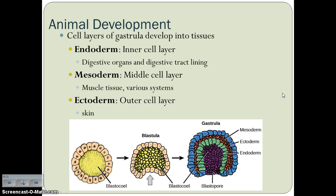The gastrula is really what determines the structure of the organism — how many germ layers it will have and what type of body cavity. The inner cell layer of the gastrula develops into the endoderm, which becomes the digestive organs and digestive tract lining. The middle cell layer becomes the mesoderm, which develops into muscle tissue and various organ systems. The outer cell layer is the ectoderm, which develops into the skin and some nervous tissue.